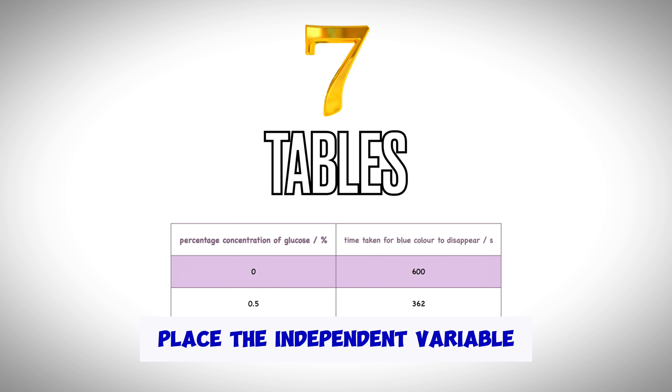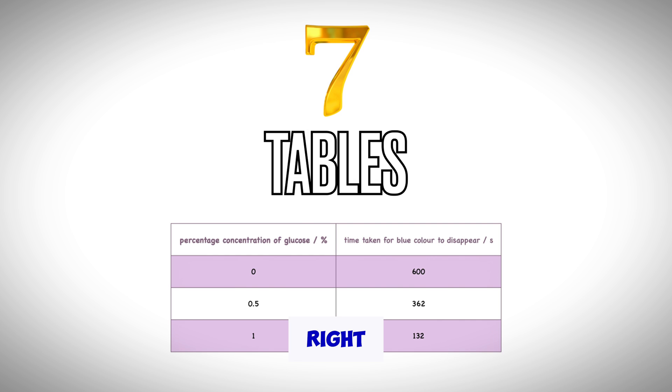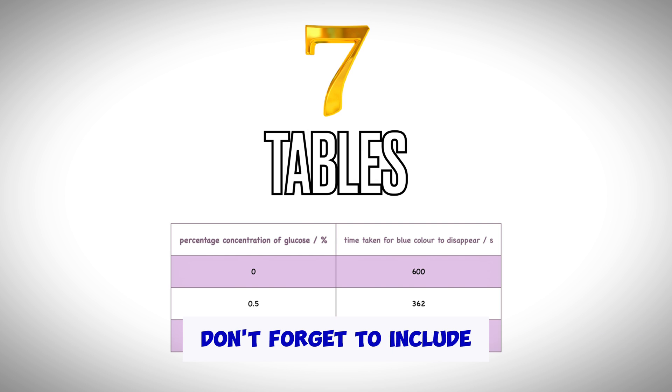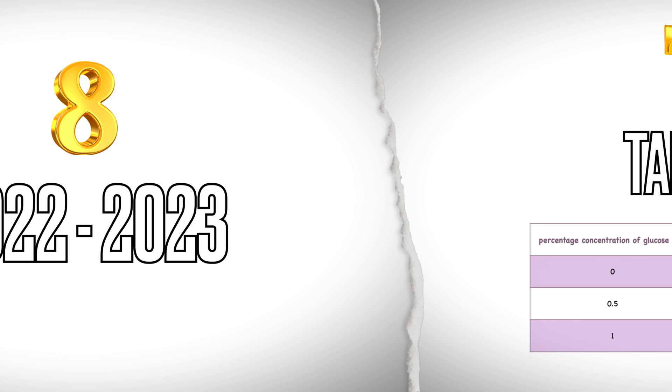When preparing a table, place the independent variable on the left and the dependent variable on the right. Don't forget to include the units in the headings of the table.